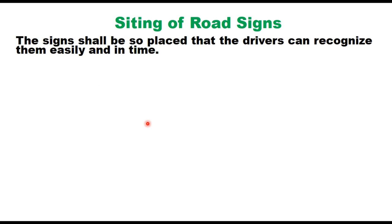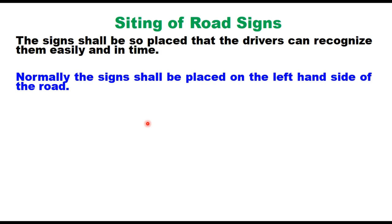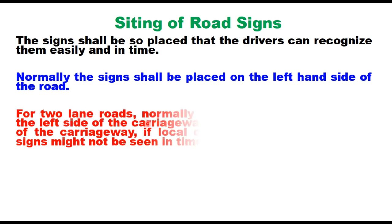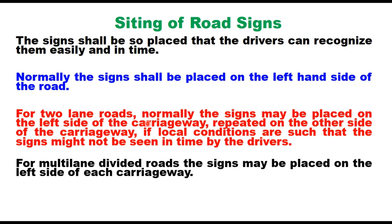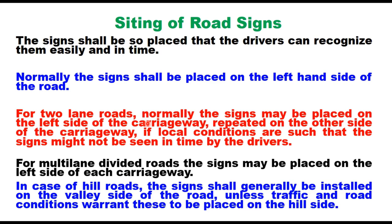The sign shall be so placed that the drivers can recognize them easily and in time. Normally the sign shall be placed on the left hand side of the carriageway. For two lane roads, the signs may be placed on the left side of the carriageway and repeated on the other side if local conditions are such that the signs may not be seen in time by the drivers. For multi-lane highways the signs are placed on the left side of each carriageway, and for hill roads the signs shall generally be installed on the valley side of the road unless traffic and road conditions warrant them to be placed on the hillside.